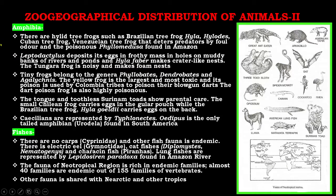Amphibia are represented by hylid tree frogs such as Brazilian tree frog Hyla, hylodids, and Cuban tree frog, Venezuelan tree frog that deters predators by foul odor, and poisonous Phyllomedusa found in the Amazon. Leptodactylus deposits its eggs in a frothy mass in holes on muddy banks of rivers and ponds. Hyla faber makes crater-like nests. The túngara frog is noisy and makes foam nests. Tiny poison dart frogs belong to genera Phyllobates, Dendrobates, and Epipedobates. The yellow frog is the largest and most toxic, and its poison is used by Colombian tribes to poison their blowgun darts. The dart poison frog is also highly poisonous.